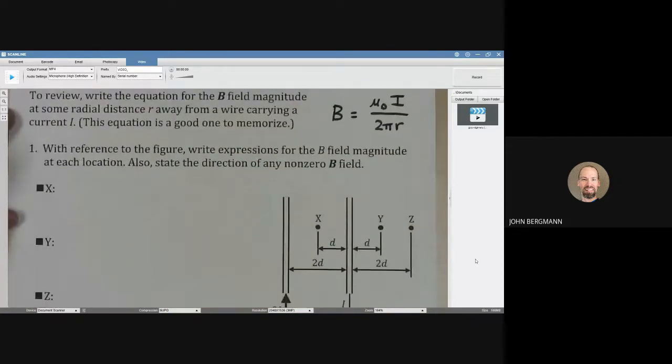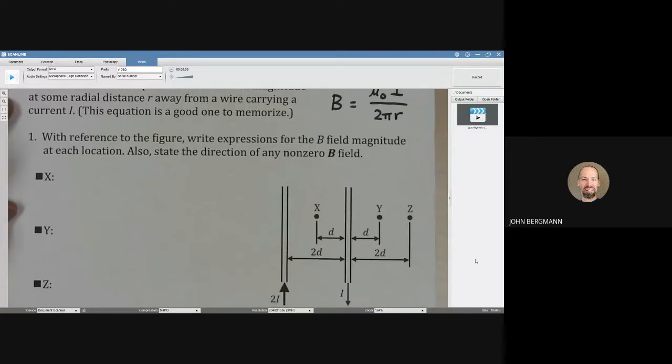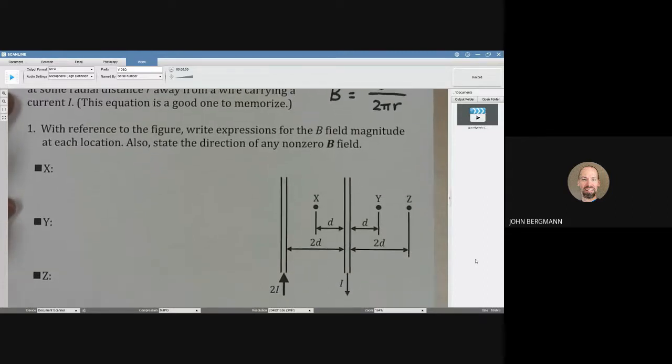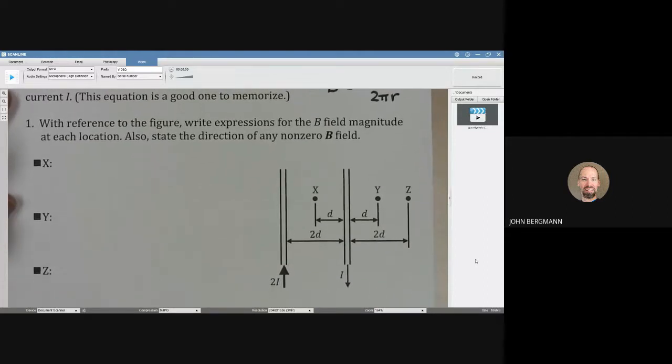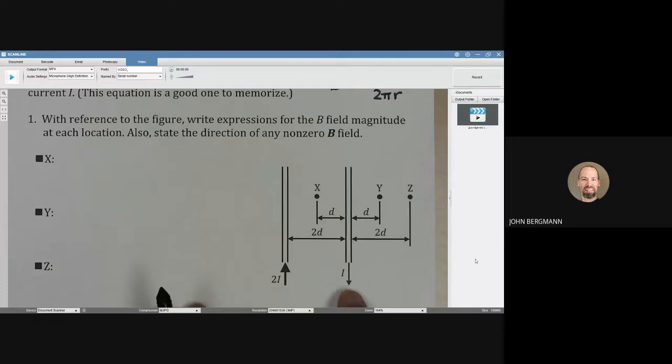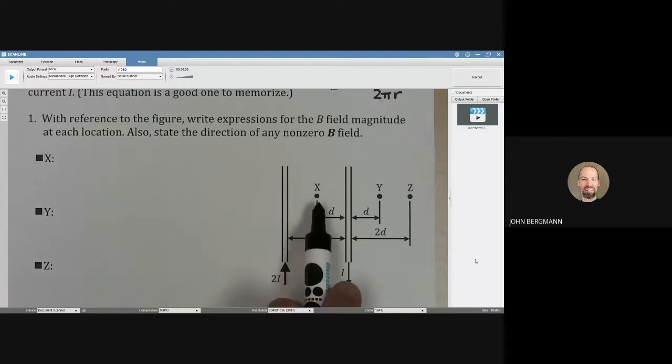With reference to this figure, we want to write expressions for the magnetic field magnitude at each of these locations. So we have two wires here, one carrying a current 2i, the one on the right is carrying a current i, and they're in specific directions. So we need to figure out what's the magnetic field magnitude and direction at each of these points x, y, and z.